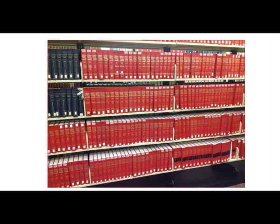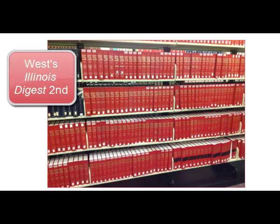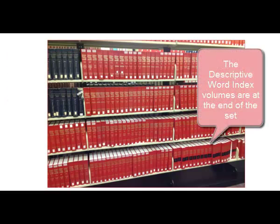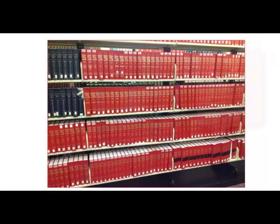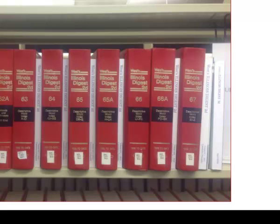Just as a refresher from the last video, the first step in using the topic and key number system for research is to locate the appropriate digest. Since we're interested in Illinois, we'll use the Illinois Digest 2nd in your library. All academic libraries in Illinois and most court libraries will have a print set of Illinois Digest — it's red, you can't miss it. So here's a shot of the descriptive word index at the end of the set of Illinois Digest 2nd at Loyola.